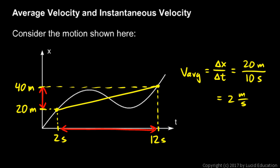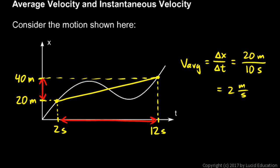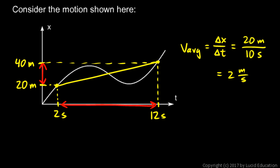That's the average velocity over that time interval. Part of the time it was moving forward, part of the time it was moving backward, and part of the time forward again — but on average it was moving 2 meters per second forward. The slope of a segment connecting two points on an x-t graph is the average velocity over that time interval.